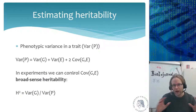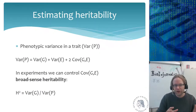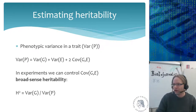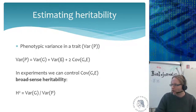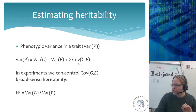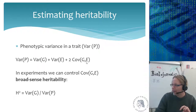When you estimate heritability, you have the phenotypic variance in a trait. The variance of P is determined by the variance in the genetics and the variance in the environment. But there's always a term people never talk about: the interaction between genes and the environment, which is two times the covariance between G and E.